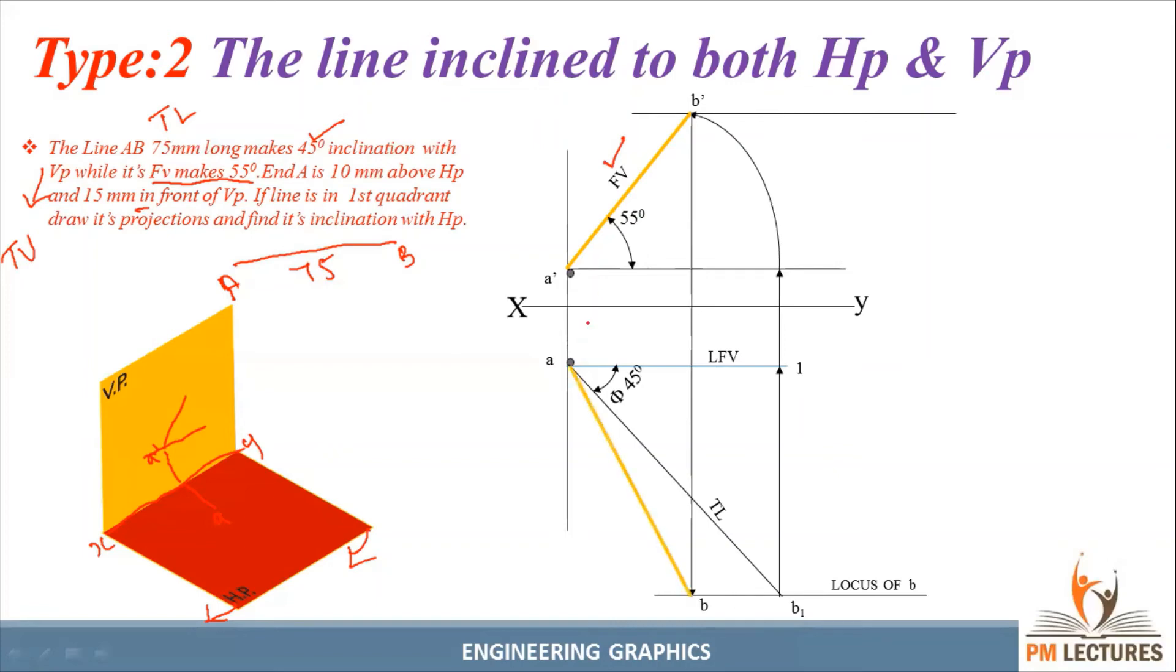Next, take your compass. The true length is 75mm. Mark an arc somewhere on the locus of B1 dash. The distance at that point is the true length. Name it B1 dash.